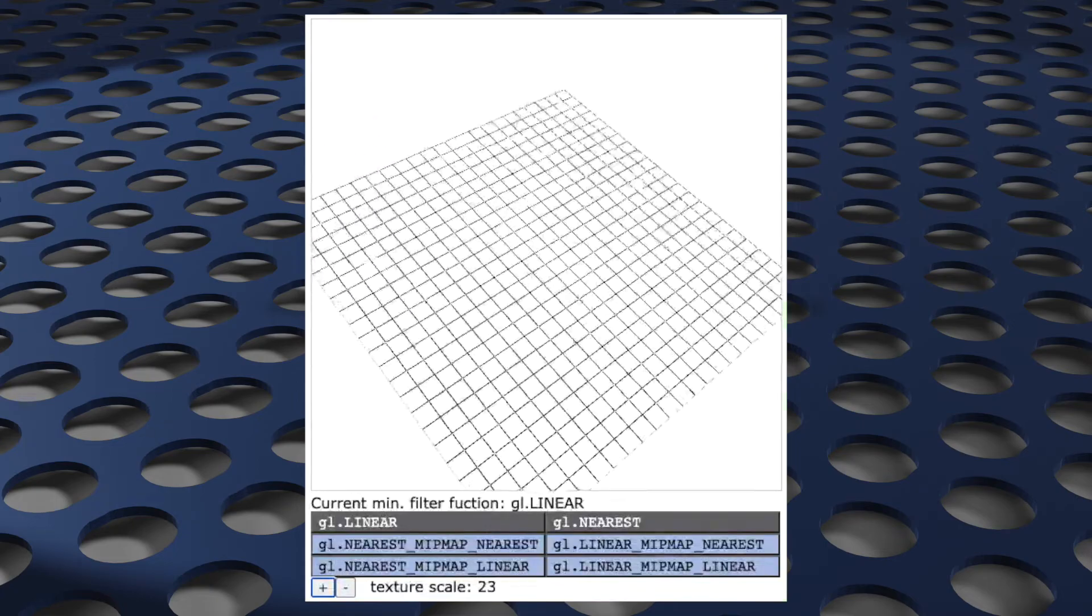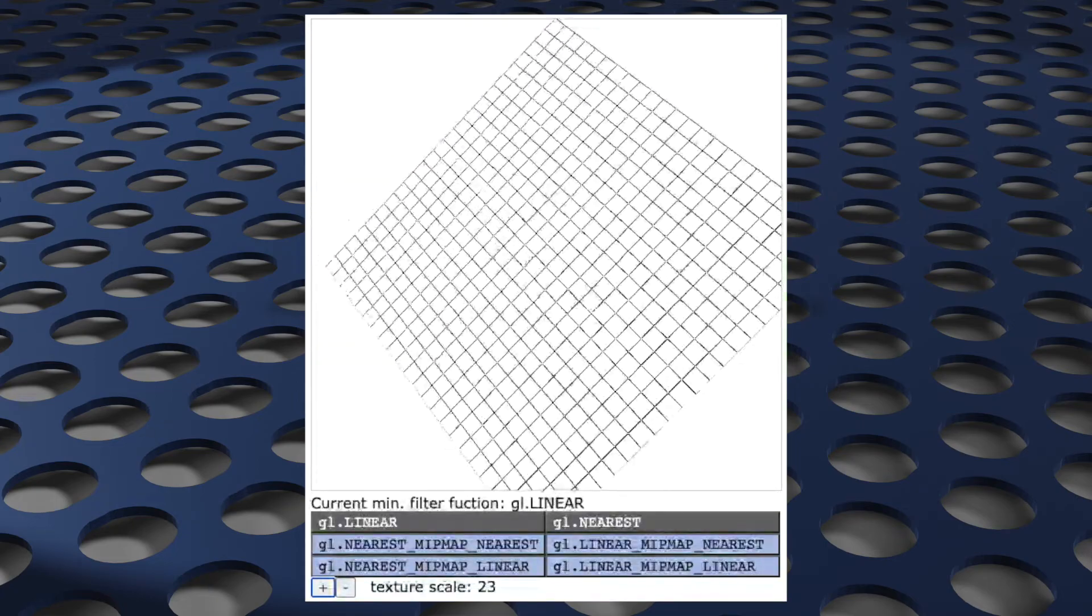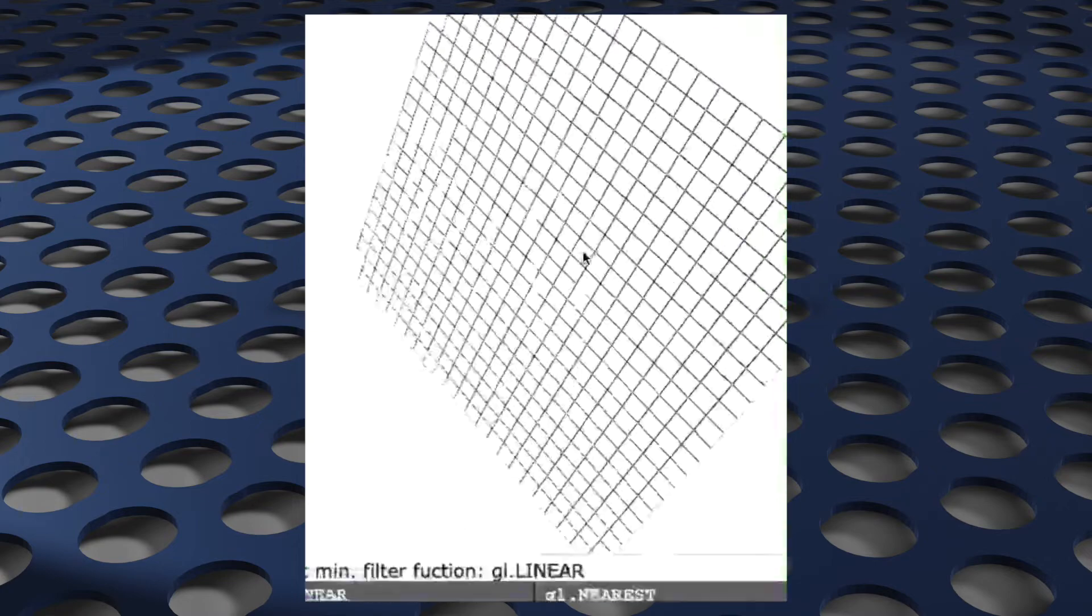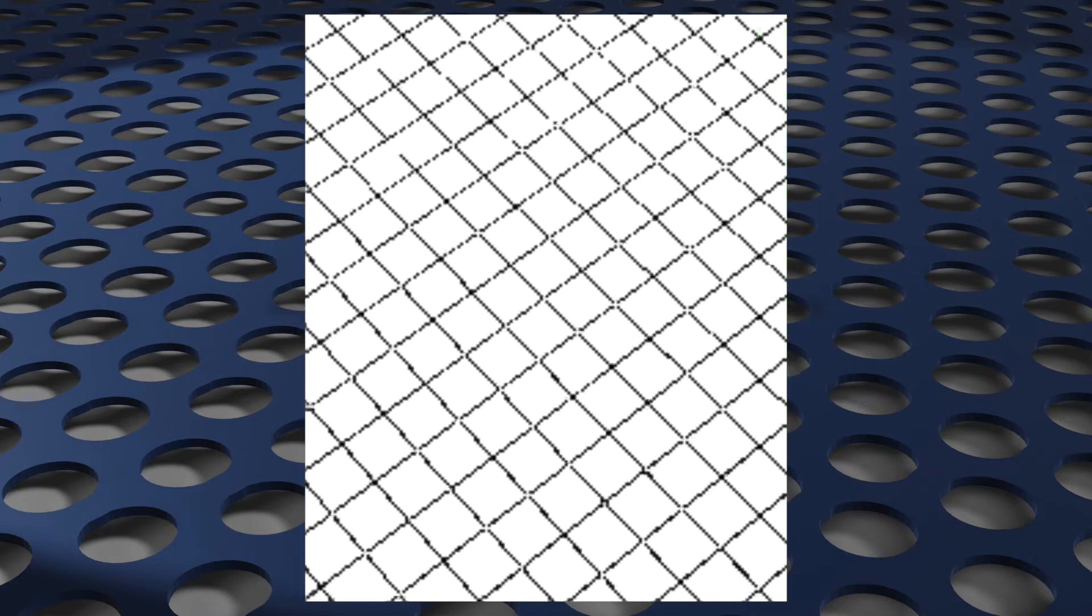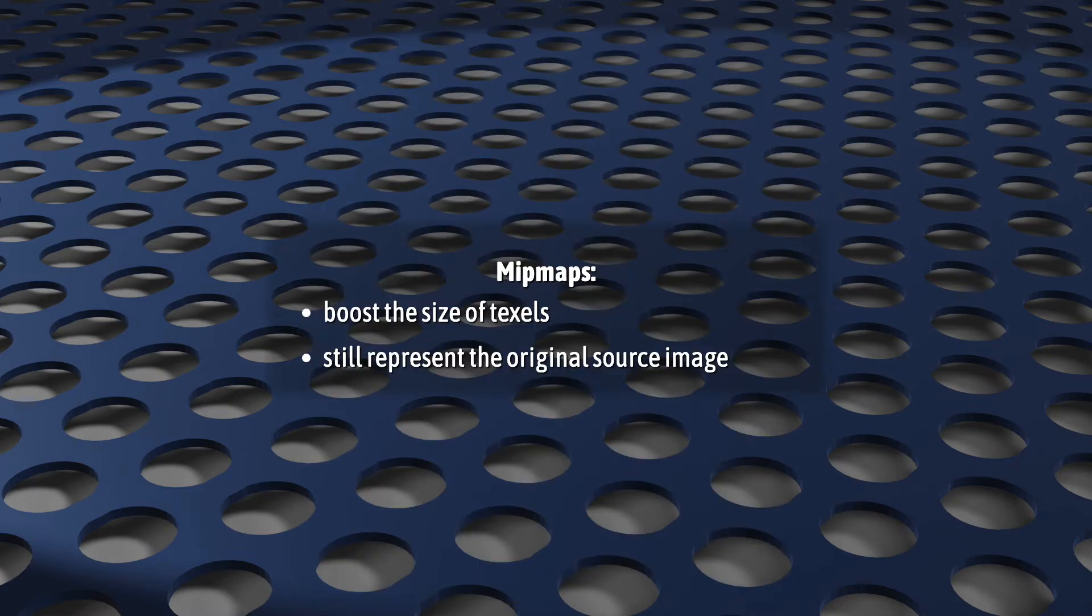What would really help in this situation would be if there was some way to boost the size of our texture elements and make the job of choosing a better pixel color easier. And so, mipmaps were introduced to do just that, to make bigger texels that better represent the original source image.